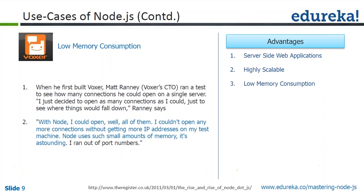Let's look at one more specific use case: Voxer. When their CTO first built it out, he ran a test to see how many connections he could open on a single server using Node.js. He decided to open as many connections as he could to see where things would fall down — when would the server break. What he found out was that with Node, he could open all of them. He used up all his available ports. As you may know, you are allowed to use only 65,535 ports on a single machine. He actually exhausted all 65,000 ports using a single process.